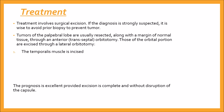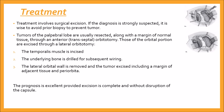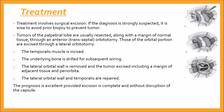The temporalis muscle is incised, then the underlying bone is drilled for subsequent wiring. The lateral orbital wall is removed and the tumor is excised including a margin of the adjacent tissue and periorbita, after which the lateral orbital wall and temporalis muscle are repaired.